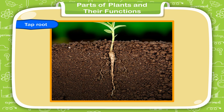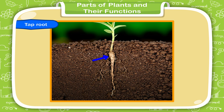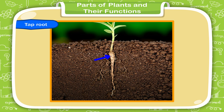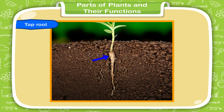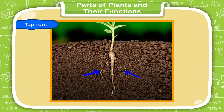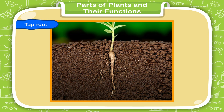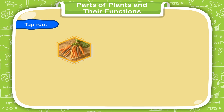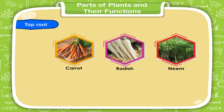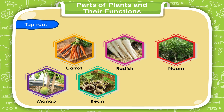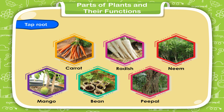Taproot. A taproot has one main thick root below the stem that goes deep inside the soil, from which smaller roots grow as its branches. Plants like carrot, radish, neem, mango, bean, and peepal have taproots.